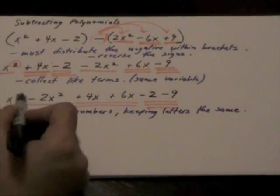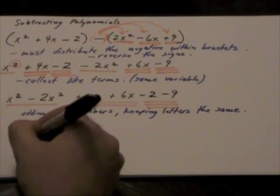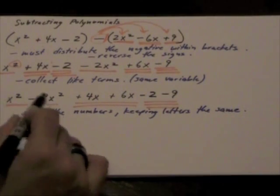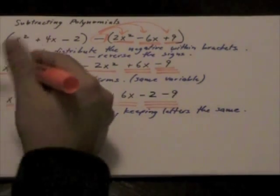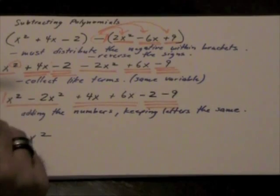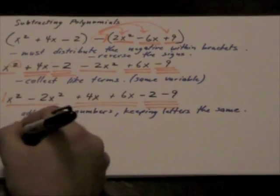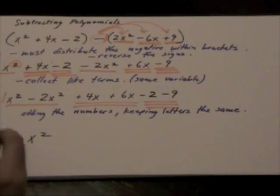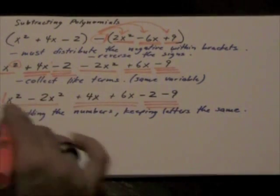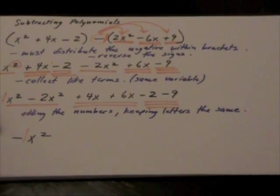Okay, so this x squared stays. So really we have a 1 here in front. Whenever we don't have a number in front of the letter, it means that we have the number 1. So the 1 minus the 2 is going to give me a negative x squared or a negative 1x squared. But some of your math teachers might not condone the 1 in front of the x squared.